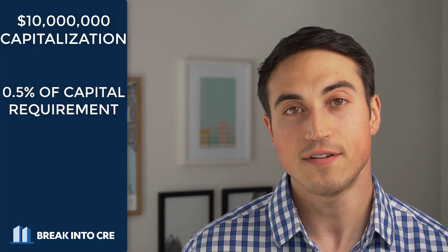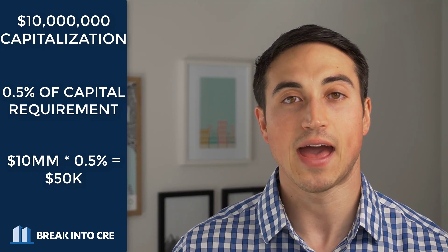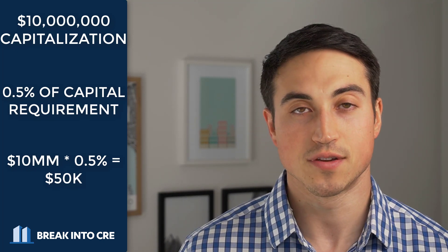From there, we have our full $10 million capitalization and our capital stack is complete. You can see we have several different layers, but the capital stack is really just the different capital sources that make up the total capitalization of a deal. This is an interesting example because it shows how a single investor or private equity firm can invest as little as $50,000 and control a $10 million asset — that's the power of the capital stack, adding different sources of capital with debt and equity to capitalize a real estate deal.